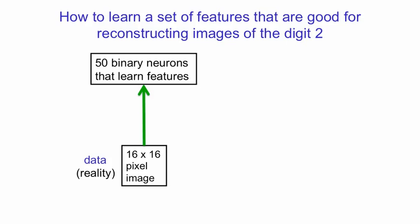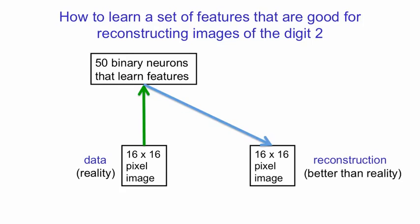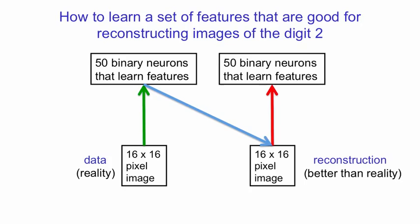That is, for each of the binary neurons, it makes a stochastic decision about whether it should adopt a state of 1 or 0. It then uses these binary patterns of activation to reconstruct the data. That is, for each pixel, it makes a binary decision about whether it should be a 1 or a 0. It then reactivates the binary feature detectors using the reconstruction to activate them rather than the data.